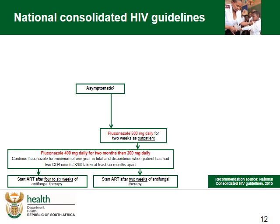So if we return to Mr. ZZ, who is at high risk of cryptococcal meningitis, the primary healthcare nurse can treat him with fluconazole 800mg daily for two weeks as an outpatient. Then reduce down to 400mg for two months as a continuation phase, and finally give him prophylaxis of 200mg of fluconazole a day until the CD4 count is more than 200 for 6 months apart. He needs to be on fluconazole for at least a year. ARVs can be started after two weeks of having commenced the antifungal therapy.